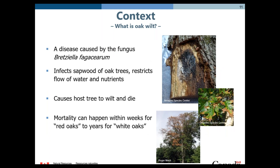So what is oak wilt? Oak wilt is a disease caused by the fungus Bretziella fagacearum. It attacks the xylem or sapwood of oak trees, blocking the flow of water and nutrients and causing a defensive response in the host — the production of gums that further choke off the xylem flow. In some cases, death can occur quite rapidly.